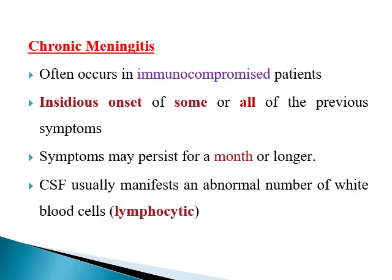In chronic meningitis, the condition is different. You will find this condition mainly in immunocompromised patients, and there is an insidious onset of symptoms. You may not find all the symptoms, and they may persist for a longer period — for months, for example. When you examine the CSF, you will find a large number of cells, but they are formed mainly of lymphocytes, not polymorphonuclear cells as in acute conditions.